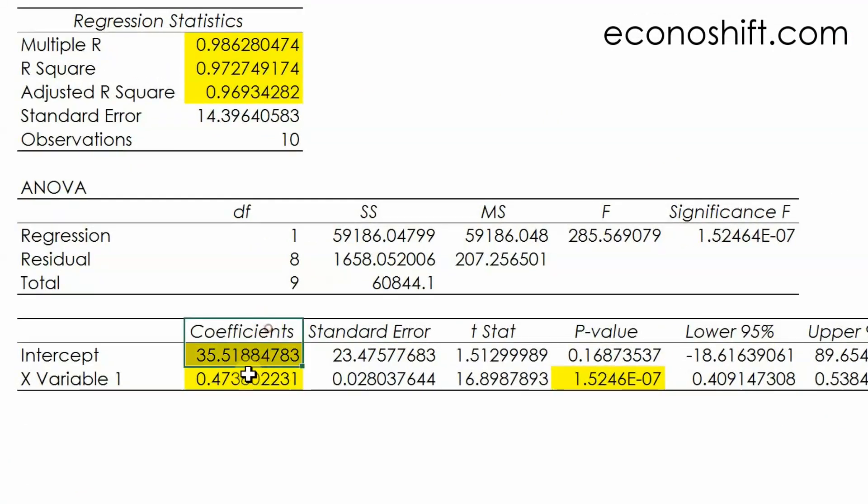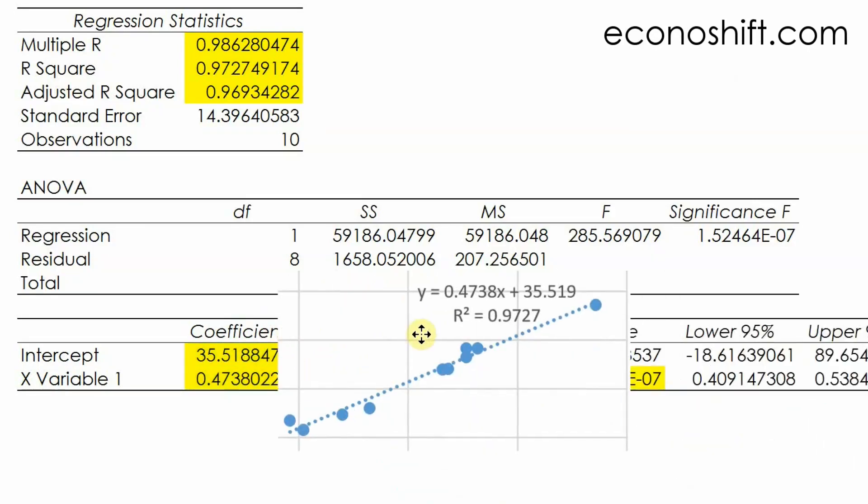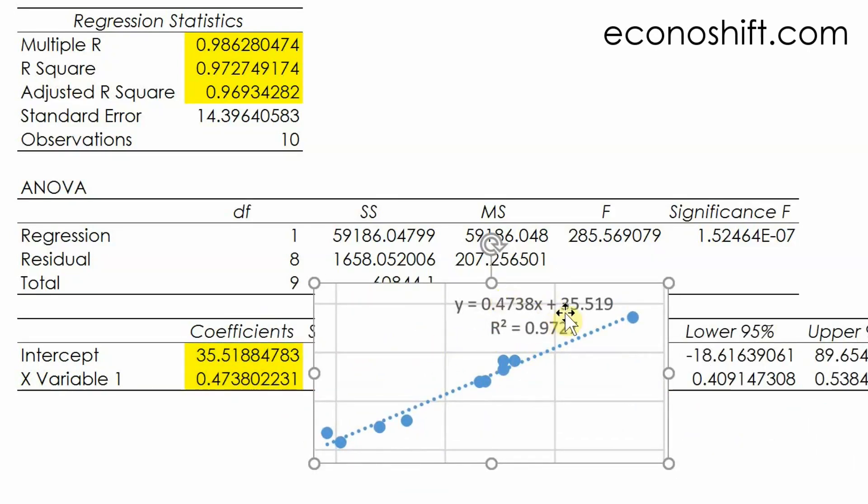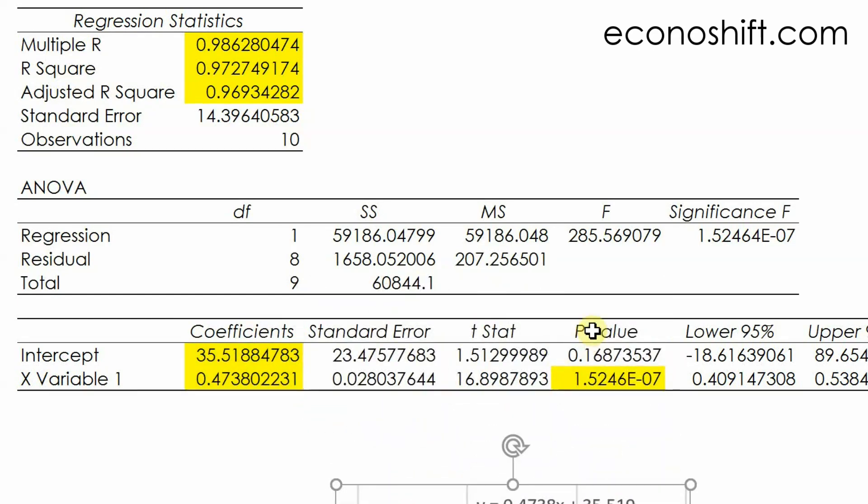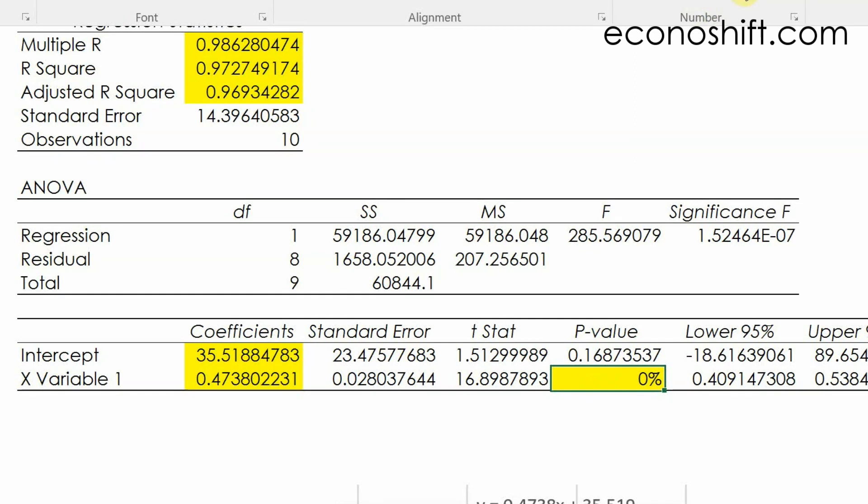The numbers in the coefficients column are the exact same numbers as the coefficients and intercept in the regression equation. Therefore, you'll use these numbers to make a regression equation. Next is the p-value of the x-value. It's difficult to see, so change it to a percentage.